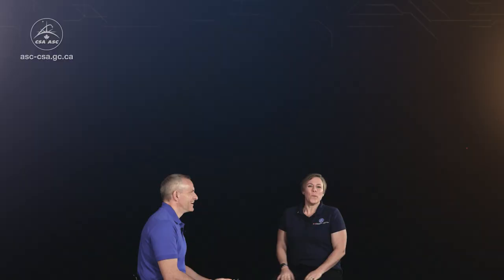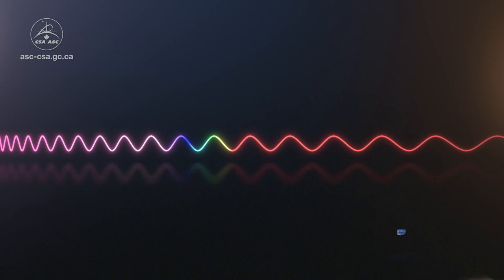Webb and Hubble are also looking into different types of light. So Webb is designed to focus on the near and mid-infrared parts of the spectrum, and Hubble uses mostly visible and ultraviolet light.